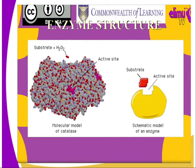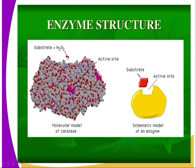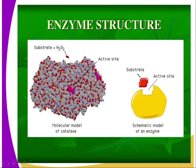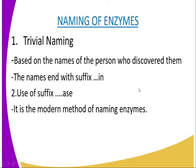Looking at the structure of the enzyme in the diagram on your screen, we have the substrate — the substrate refers to the food that will be broken down. An enzyme has an active site, and the substrate normally fits into the active site of the enzyme. The substrate should have the same size and shape as the active site of the enzyme for it to be digested.